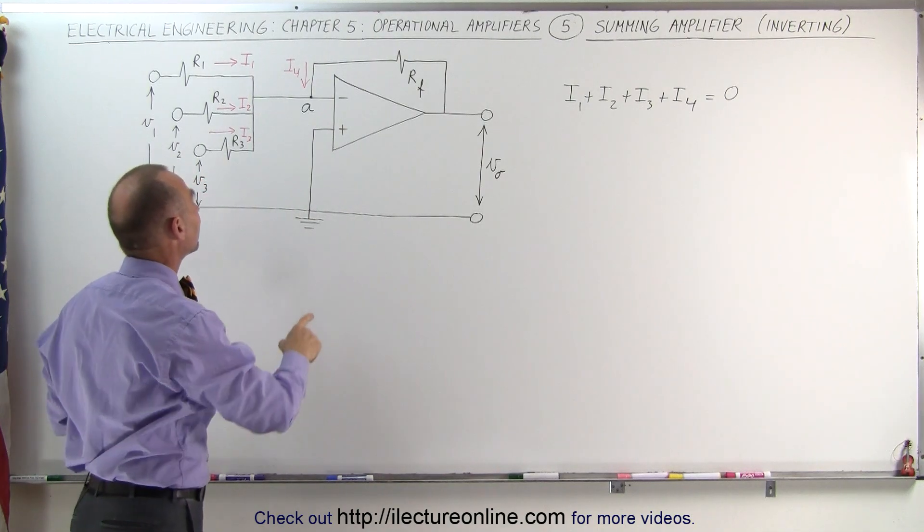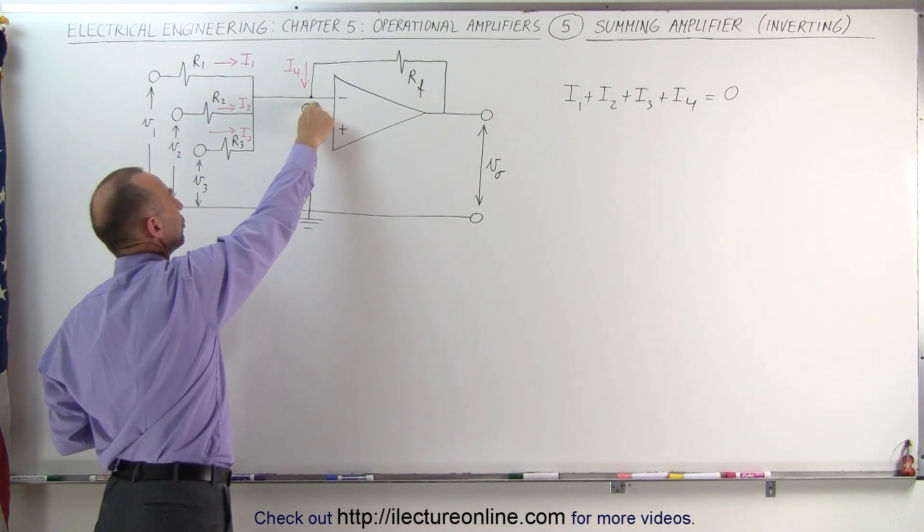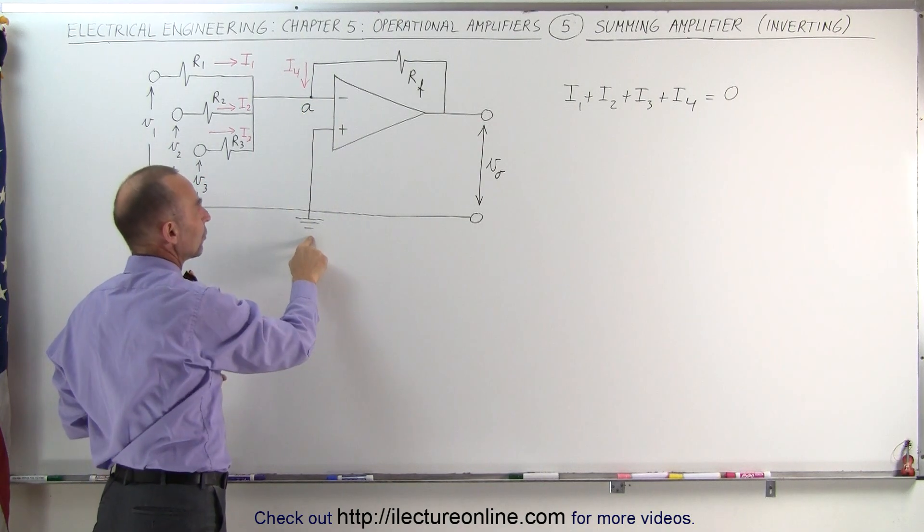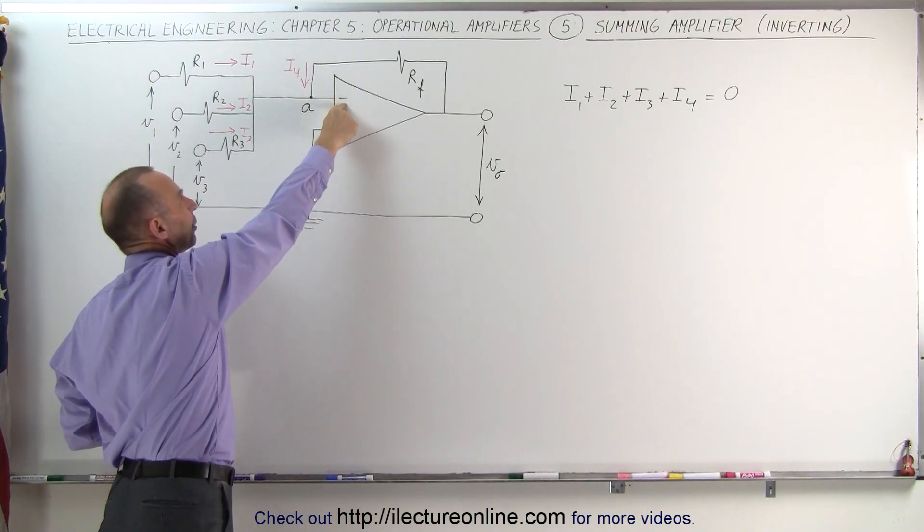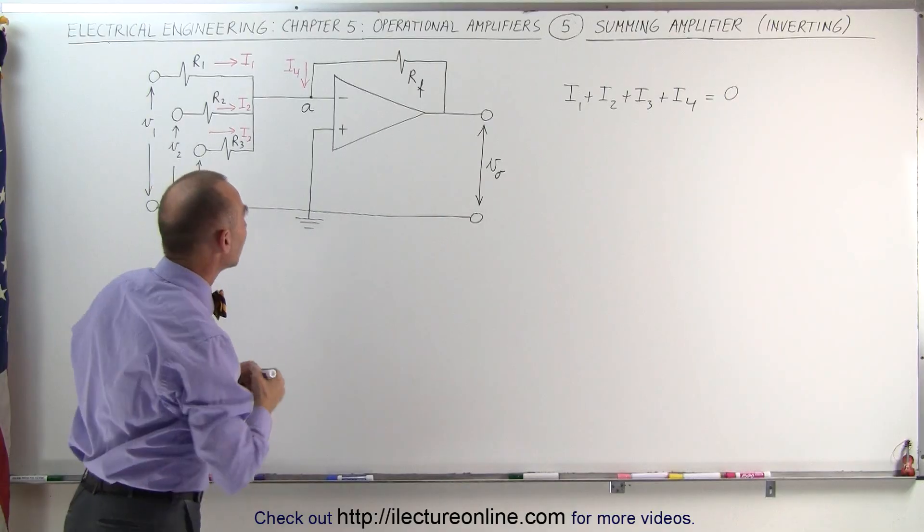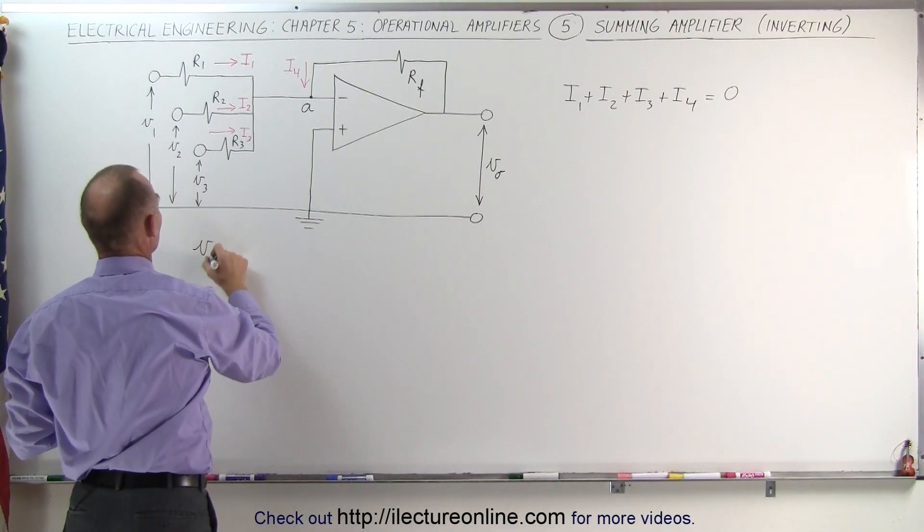Also we can say that the voltage between point A, the node A, and the ground here also must be zero because the potential difference between the inverting and non-inverting terminals is nearly zero. In other words, V sub A is approximately equal to zero.